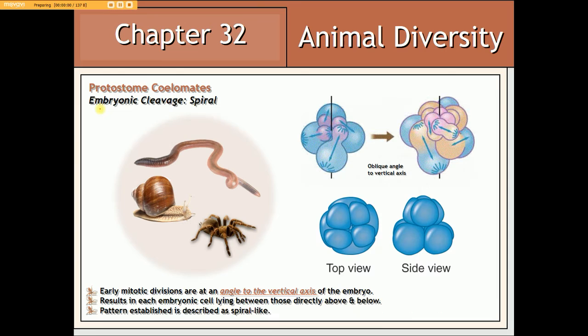With regards to embryonic cleavage among protostome coelomates like mollusks, annelids, and arthropods, it occurs at an angle that is acute to the vertical axis of the embryo. As a result, when viewed in profile, the cells seem to be offset relative to the cells immediately above or below, and so it is often described as exhibiting a spiral pattern.